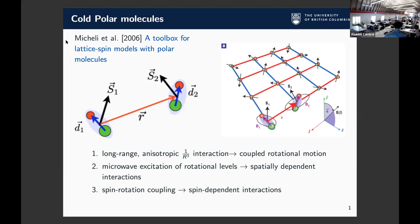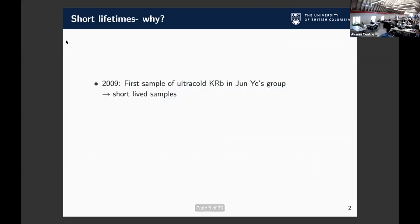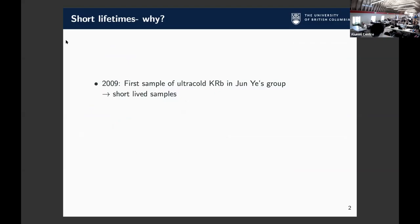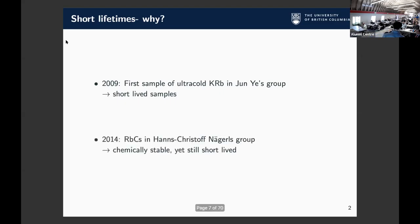Because of work like this, there was a lot of interest in making polar molecules. The first successful polar molecule — potassium rubidium — was made in Junyi's group in 2009. They found that those samples were very short-lived, and this phenomenon kind of continued.